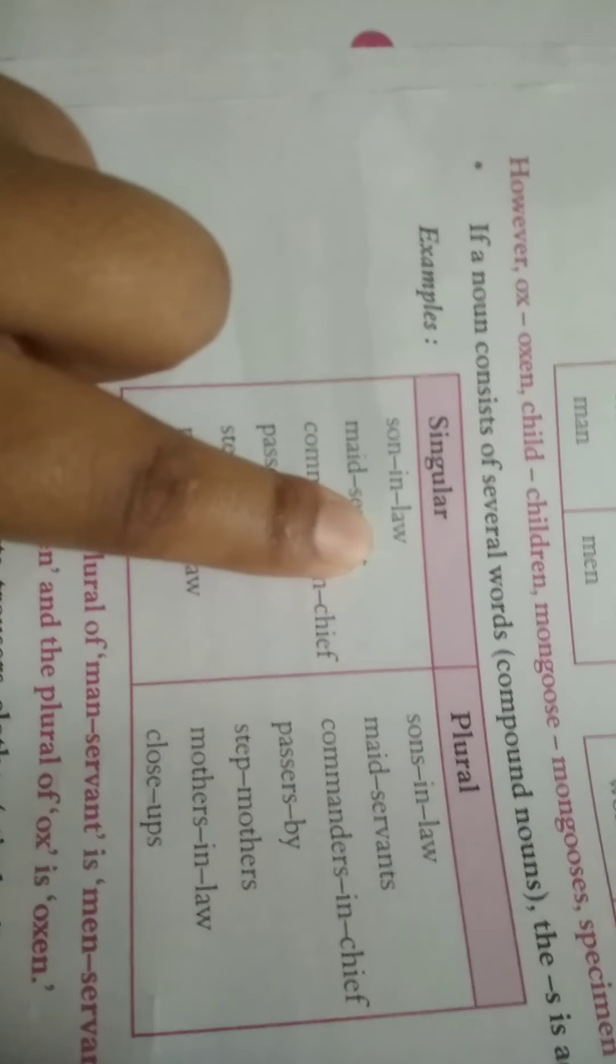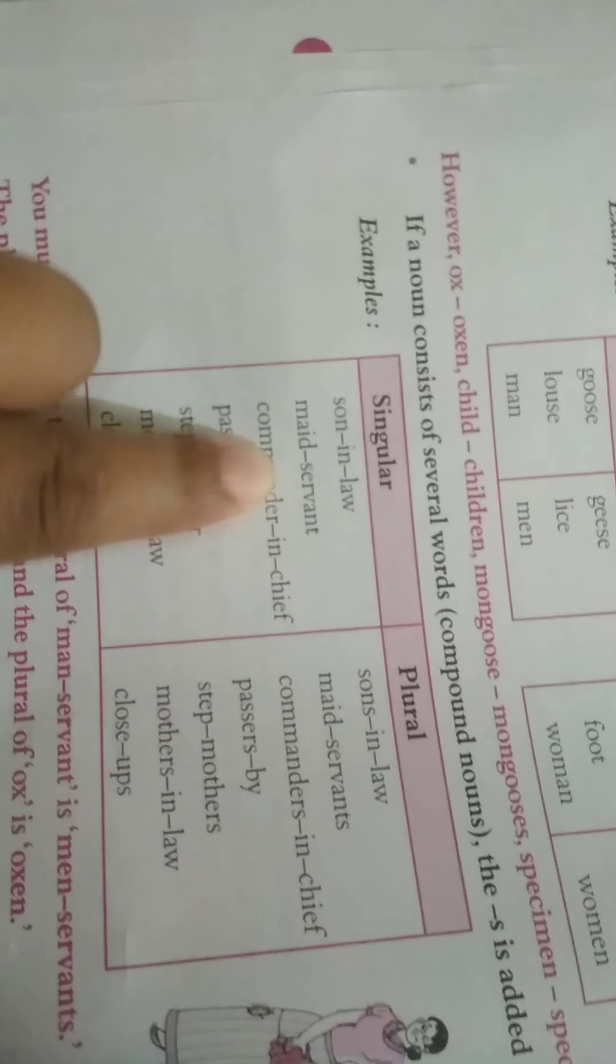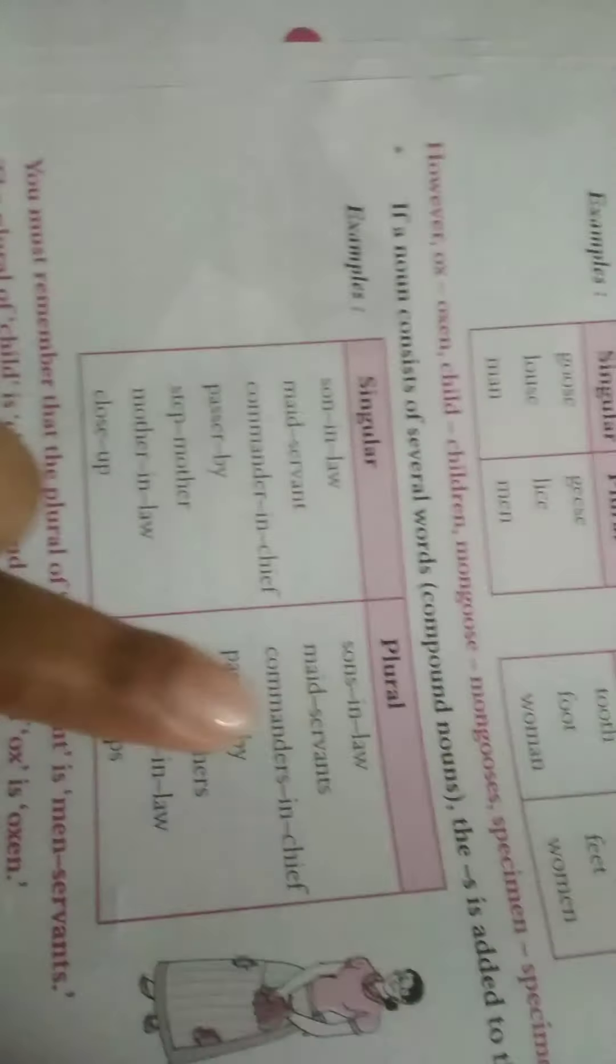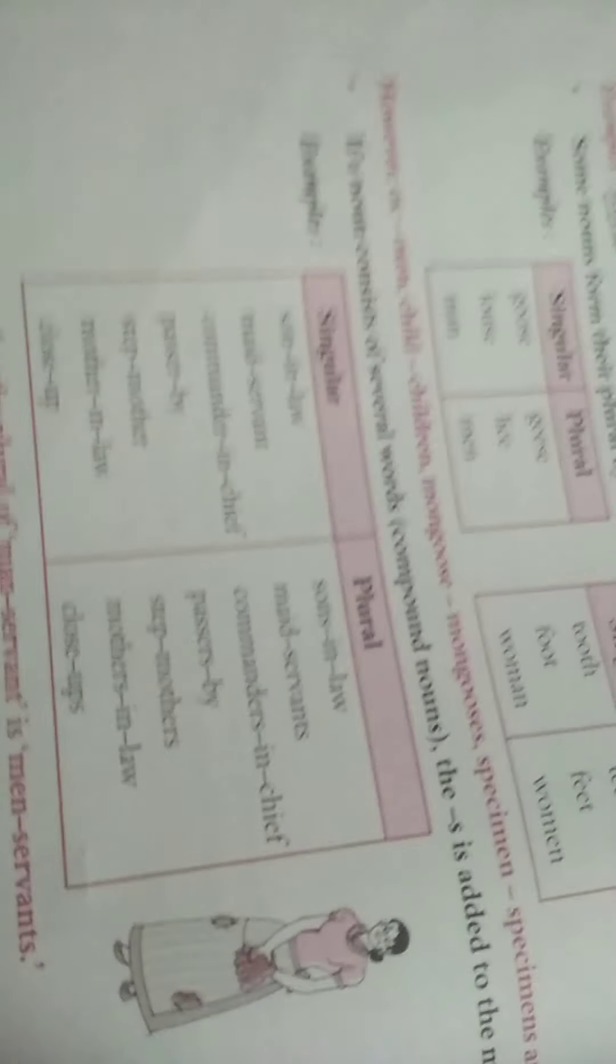Now, maidservant. Servant is the main word. So, maidservants. Commander-in-chief. So, commander is the main word. So, commanders in chief. So, this is how you convert compound nouns into, compound nouns singular into plural by adding S to the main word.